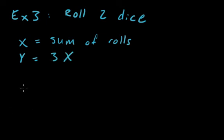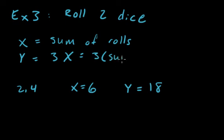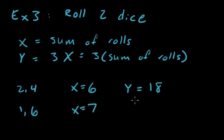Say you roll a 2 and a 4, then x equals 6, and y equals 3 times x, which is 18. Another possible outcome would be 1 and a 6, so x equals 7 and y equals 21.